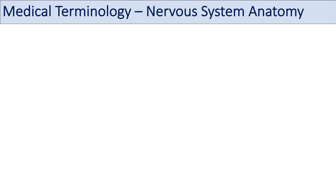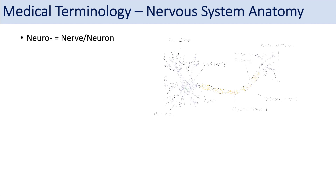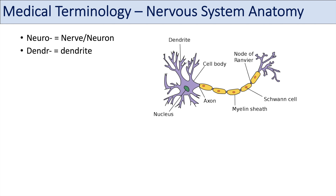Those are a lot of medical terms for macroscopic nervous system anatomy. Now we're going to talk about microscopic nervous system anatomy. The prefix neuro means nerve or neuron — that's pretty easy to remember. We can be more specific by talking about certain parts of the neuron. The prefix dendra means dendrite; dendrites are tree-like structures that branch off the soma of the neuron and help with receiving neural input from other neurons.